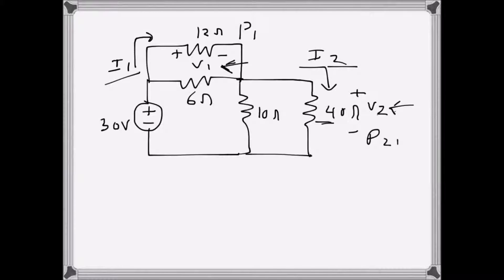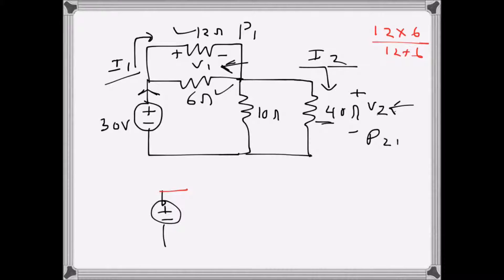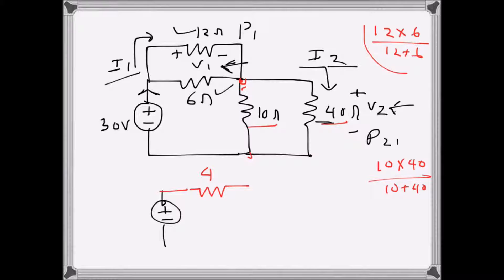First, I will find the source current — the current coming out of the source. To do that, I will minimize the resistances. Here I have 12 ohms and 6 ohms in parallel, so 12 times 6 over 12 plus 6 gives a parallel equivalent of 4 ohms. Then I have 10 ohms and 40 ohms in parallel: 10 times 40 over 10 plus 40 equals 400 over 50, which is 8 ohms.